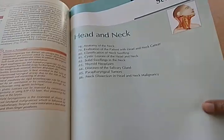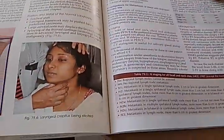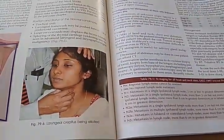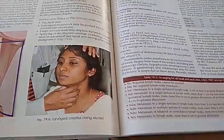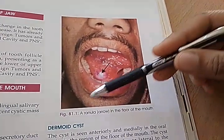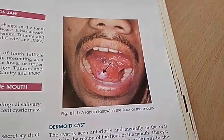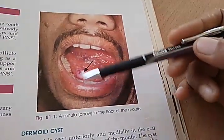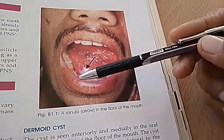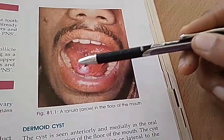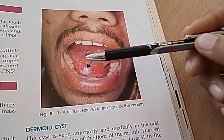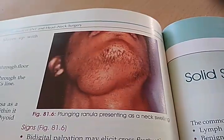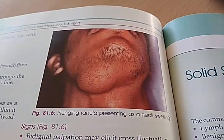Rigid bronchoscopy, head and neck. Laryngeal crepitus being elicited. This is a ranula — a mucus retention cyst of the sublingual salivary gland. And this is the plunging ranula.